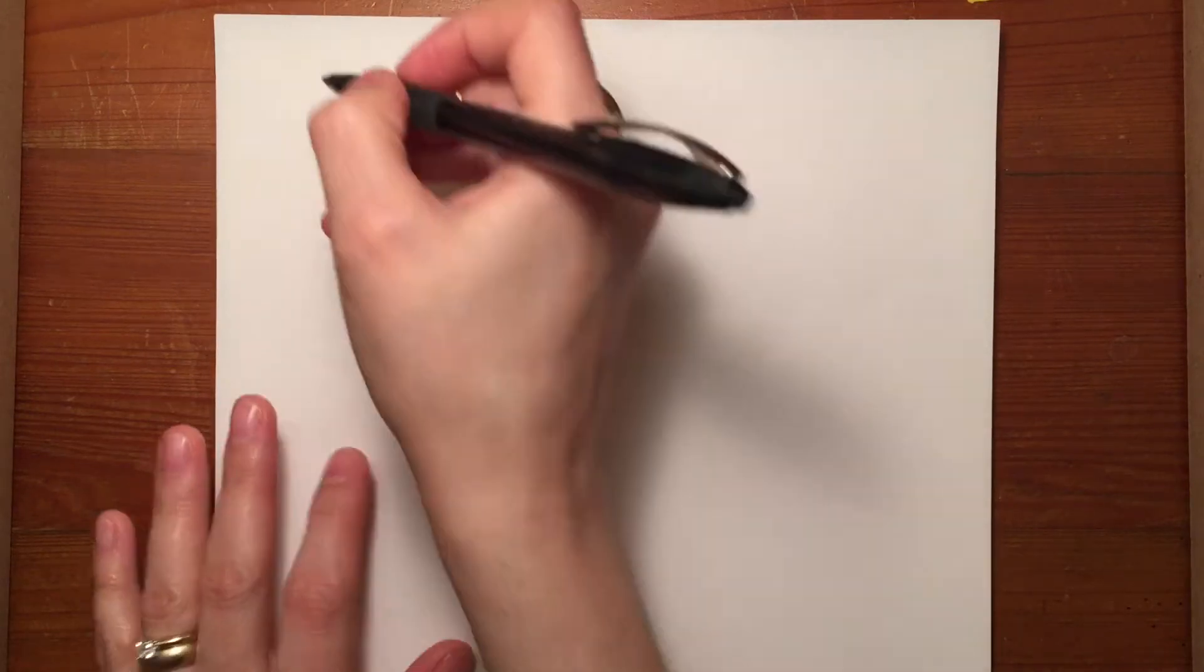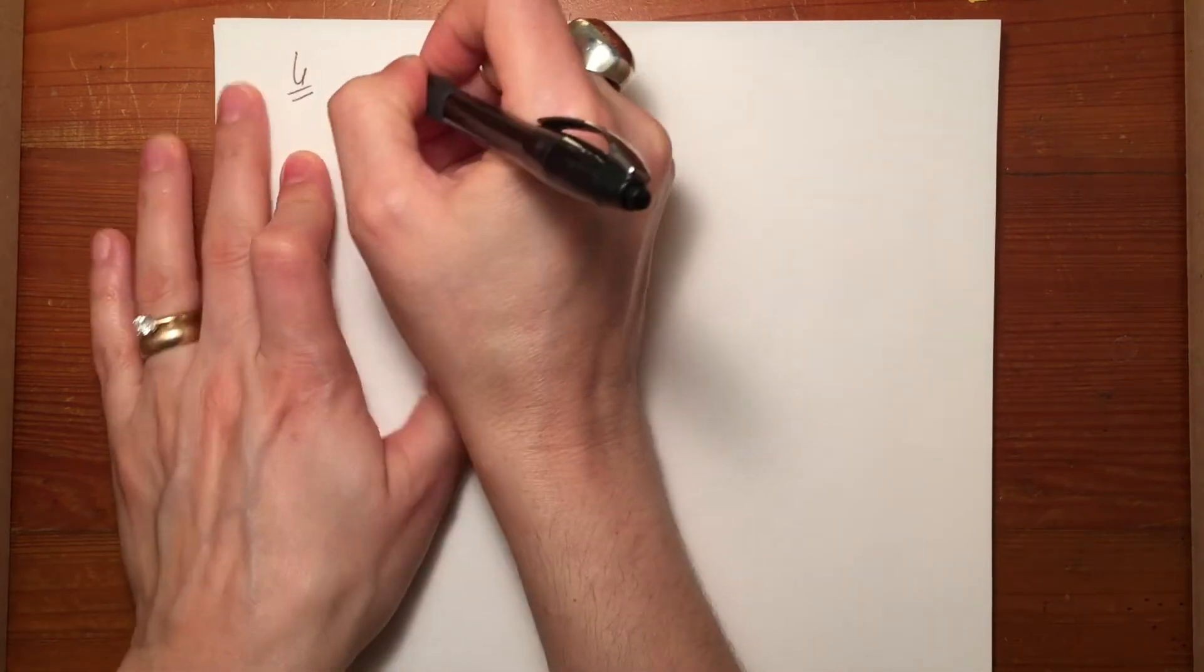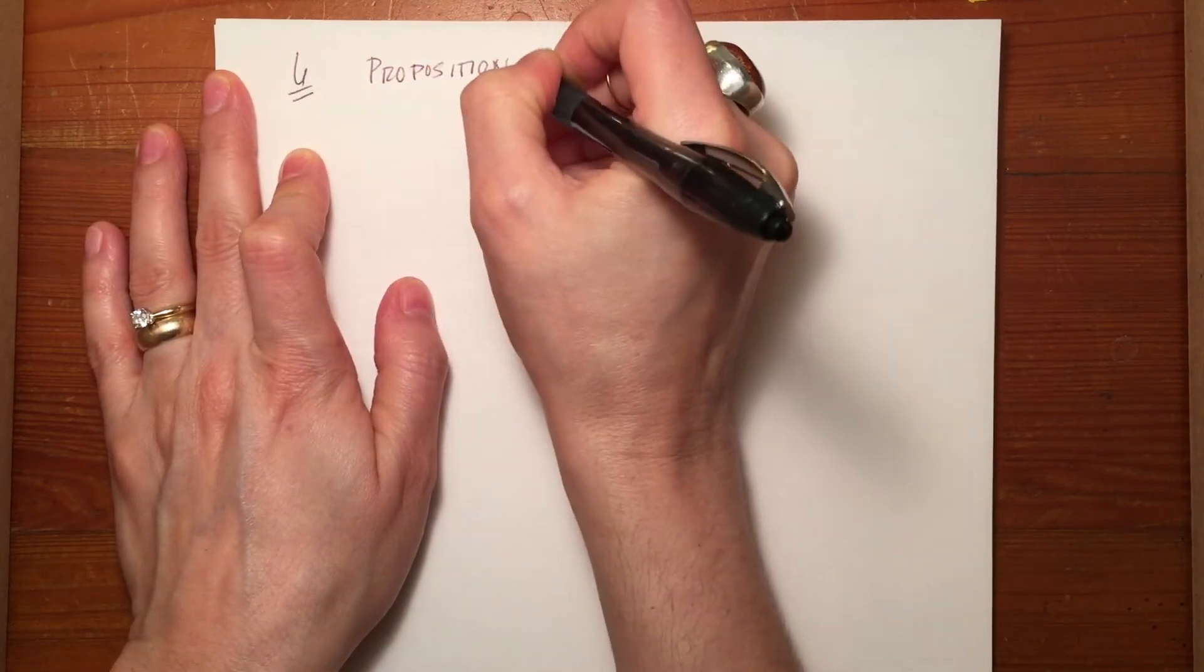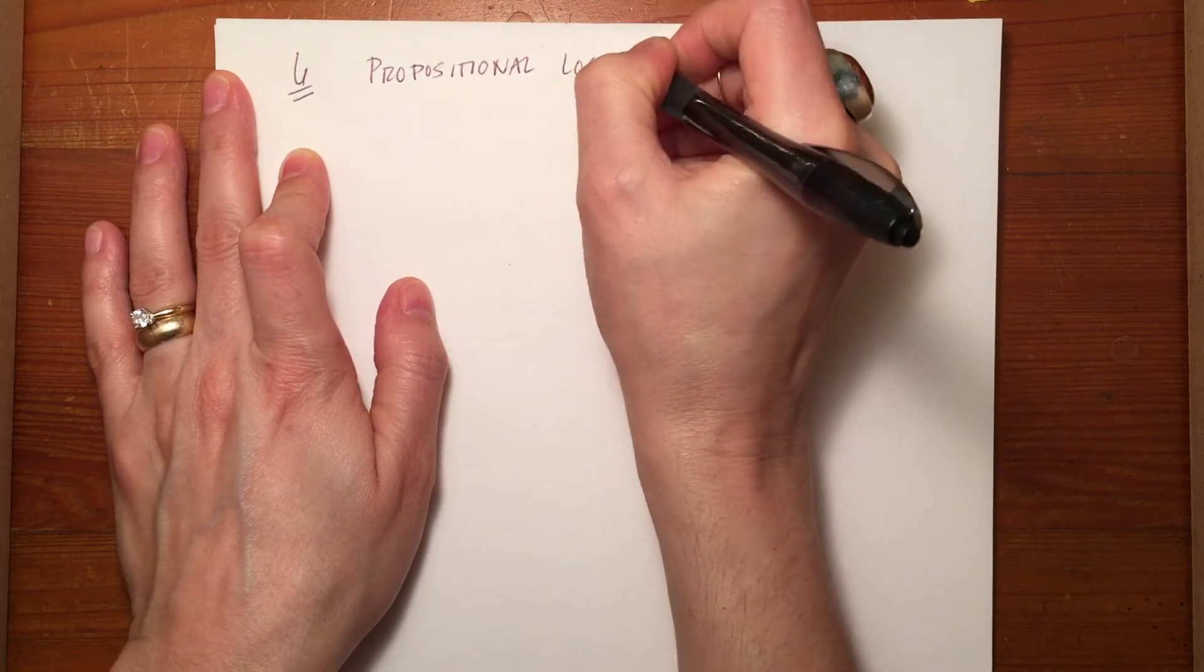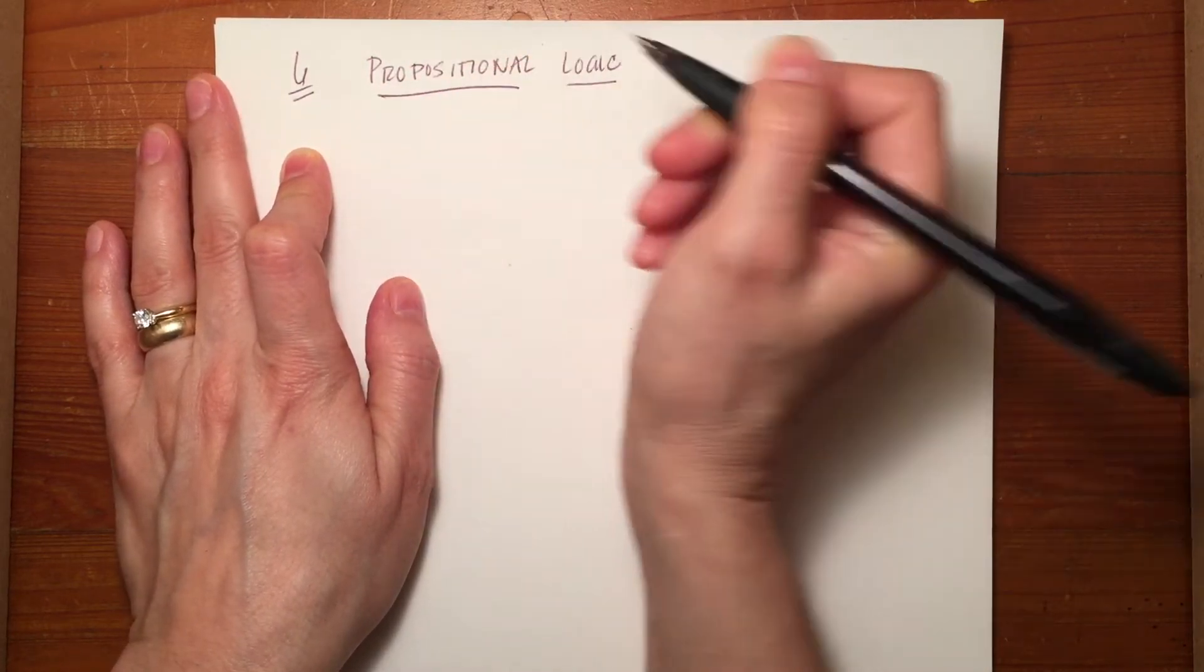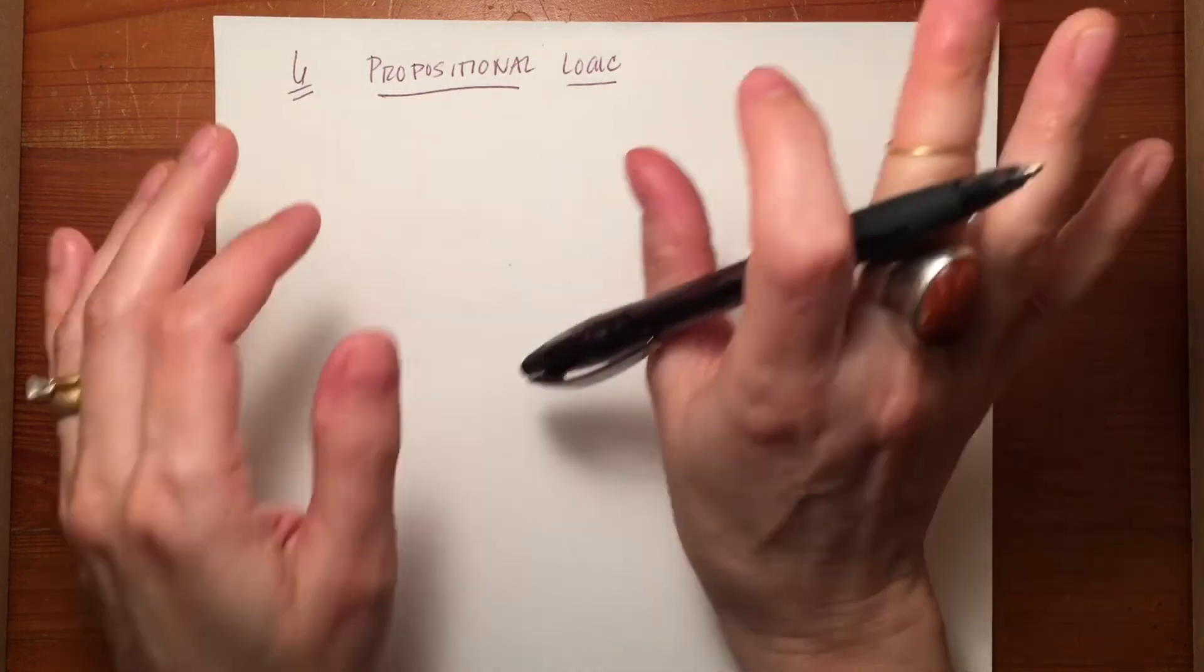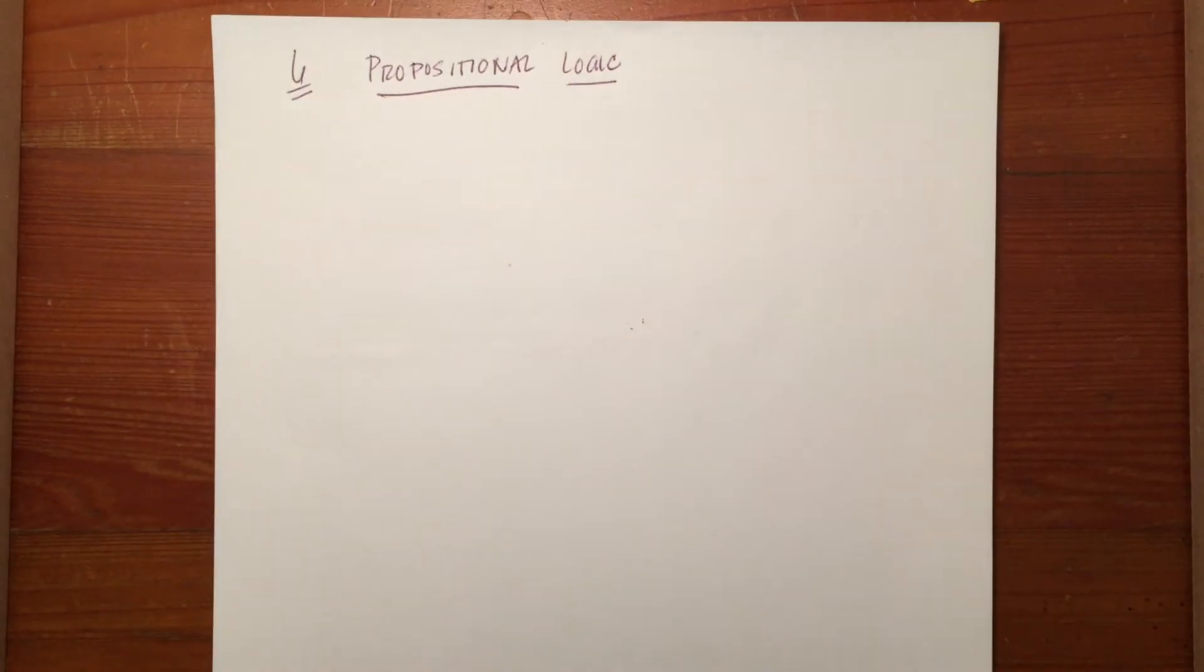Today we start chapter six, propositional logic. This type of logic is very different than what we've done before. Mainly, it leads into higher levels of logic. For instance, if you ever wanted to take a symbolic logic course, this is a lead-in to that. Some of the concepts are very similar.